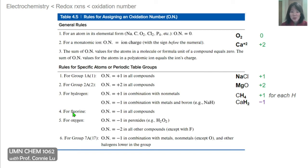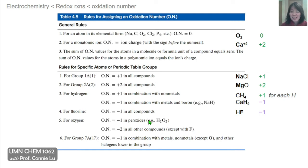For fluorine, the oxidation number is −1; for example, in HF, the fluorine atom has an oxidation number of −1. Oxygen has two rules: most commonly, oxygen has an oxidation number of −2 — as in magnesium oxide or carbon dioxide, each O atom is −2. There is an exception when there is an O–O bond, such as in a peroxide — in that case, each oxygen has an oxidation number of −1.